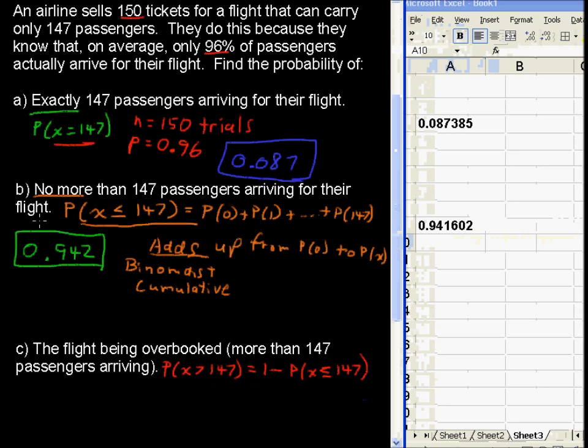that is equal to 1 minus the probability that we have no more than 147. So, just to go back to b real quick, if the language is no more than, you're going to use the binom dist cumulative. So, when you see this, no more than.